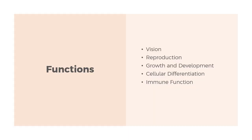Vitamin A is critical for normal visual function, for the reproductive system, for growth and development, and cellular differentiation. Vitamin A also plays a major role in immune function.